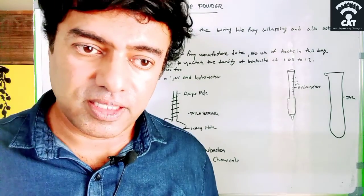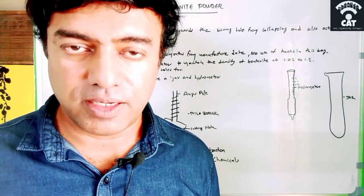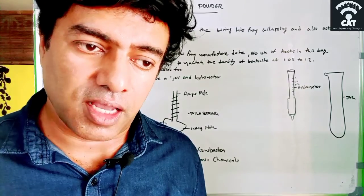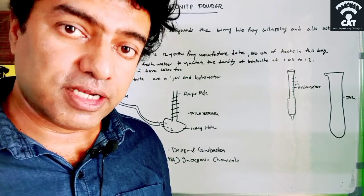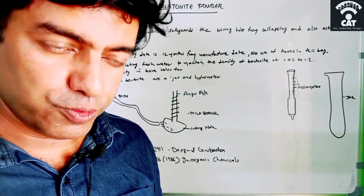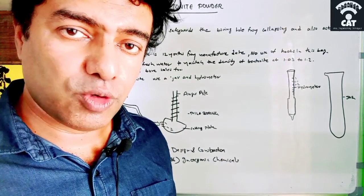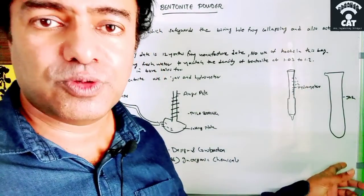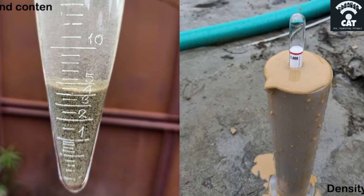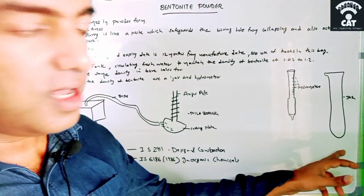Now we need to know whether the density in the bentonite tank is correct or not. We always need to check because the workers keep on adding the bentonite powder into that fresh water. We need to know whether the density is between 1.03 and 1.2. How do we know? There is a jar available for that and also a meter called a hydrometer. This is the hydrometer. This is the jar which you used to see in chemistry labs. We need to take the bentonite slurry from this tank with this jar.